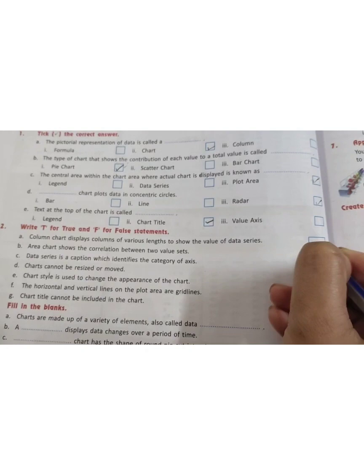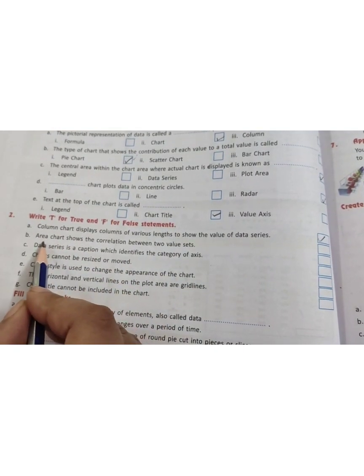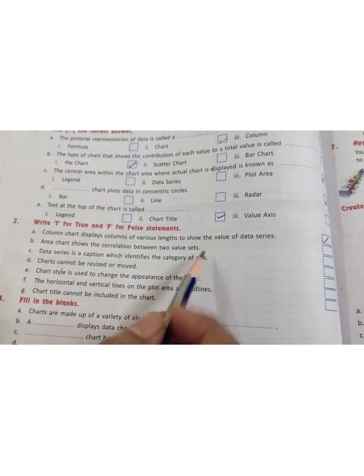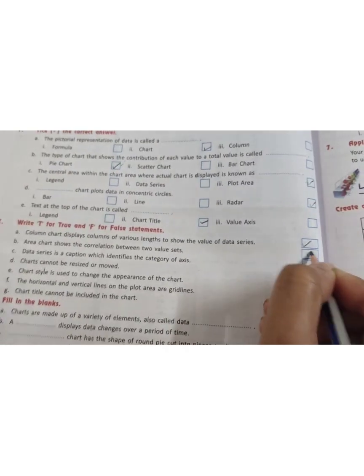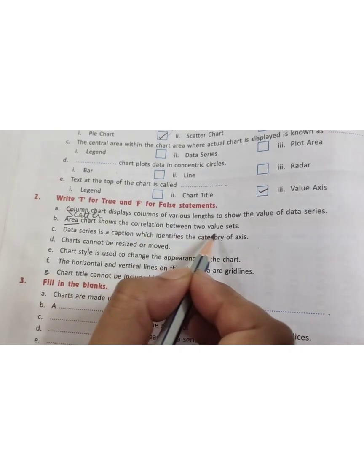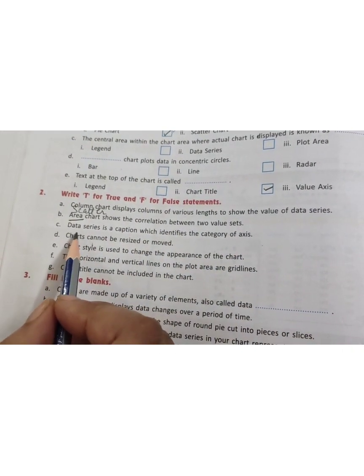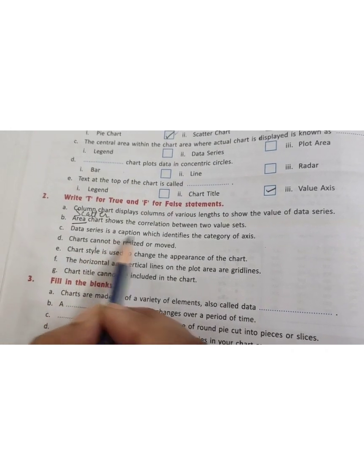Area chart shows the correlation between two value sets. The statement is false. Instead of area chart, it will be scatter chart shows the correlation between two value sets.